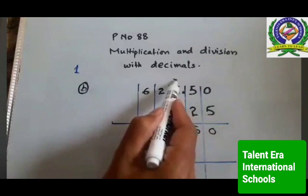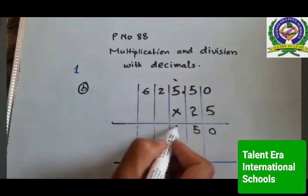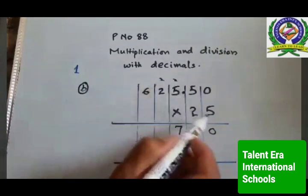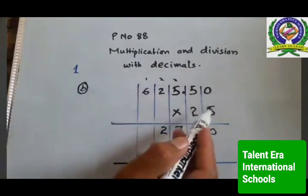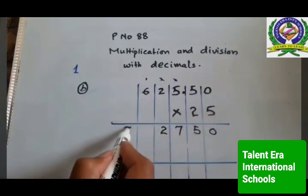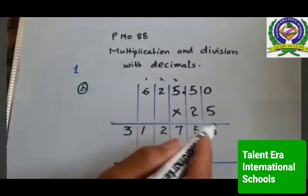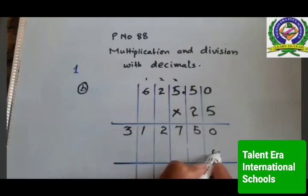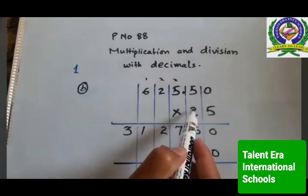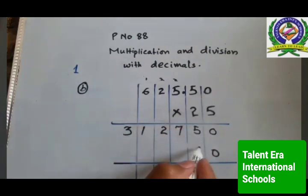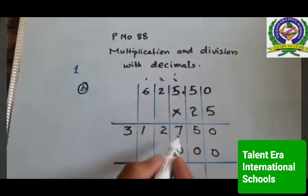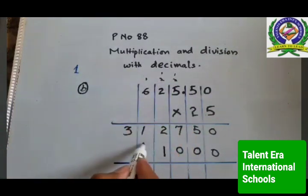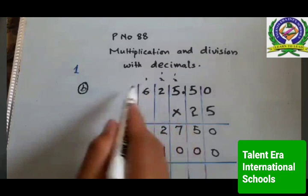5 with 5 is 10, plus 2 is 12 — 1 will be carry. Then 5 with 6 is 30, 30 plus 1 is 31. Now according to rule, put 0 here, then go to the next digit 2. 2 multiplied with 0 is 0, 2 with 5 is 10 — 1 will be carry. 2 with 5 is 10, plus 1 is 11 — 1 carry. 2 twos are 4, plus 1 is 5. And 2 with 6 is 12.